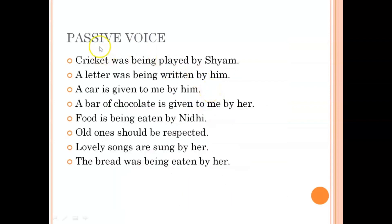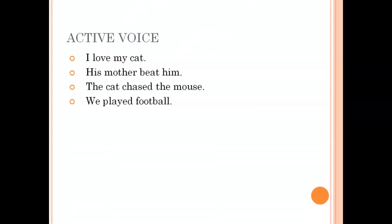Some examples of passive voice: 'Cricket was being played by Sham,' 'The letter was being written by him.' You can see the word 'by' is present in most passive voice sentences. Examples of active voice: 'I love my cat,' 'His mother beat him,' 'The cat chased the mouse' — subject, verb, then object. In passive voice, the object gets replaced by the subject.